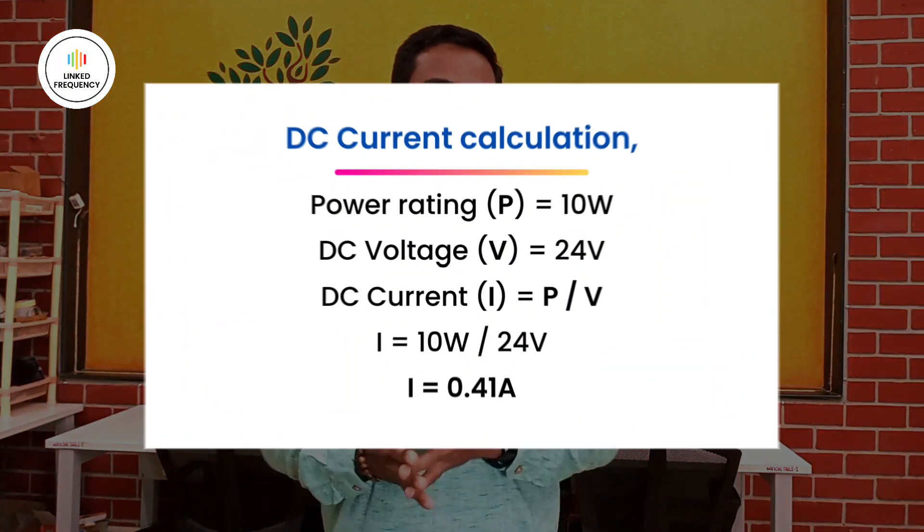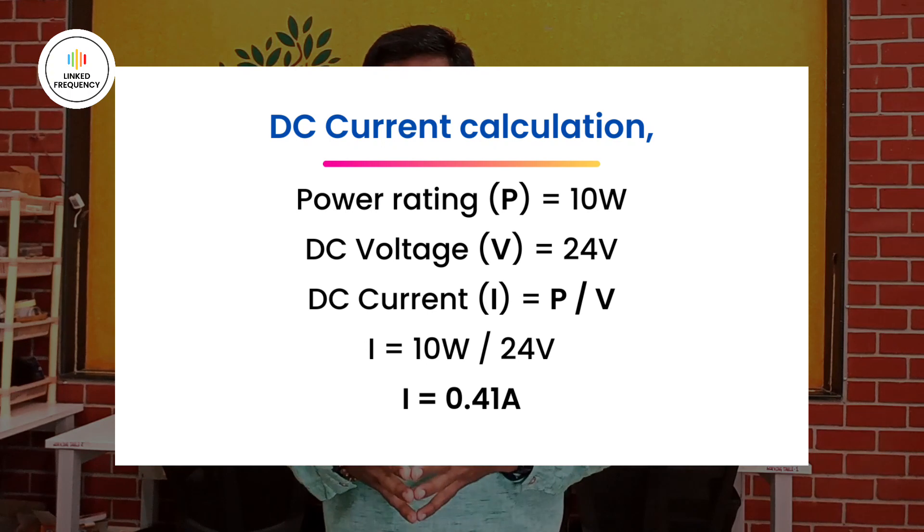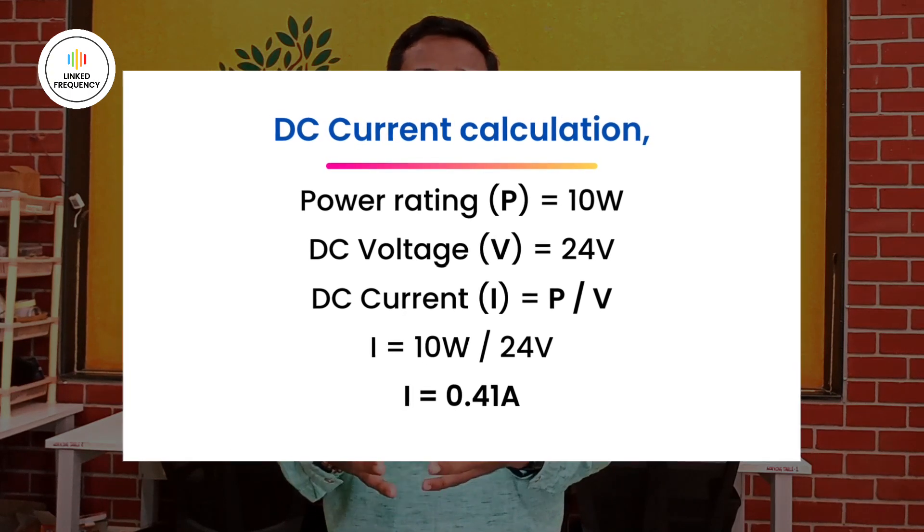The second example is a DC exhaust fan operating at 24 volts DC input voltage. It operates at 10 watts generally. Dividing 10 watts by 24 volts gives 0.41 amperes. This 0.41-ampere DC current needs to be supplied to the exhaust fan to run at its fullest speed. This is how power and current calculations work for both AC and DC appliances.